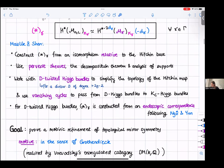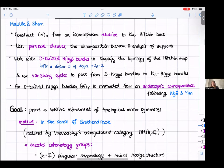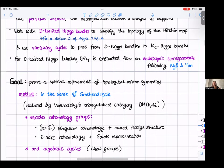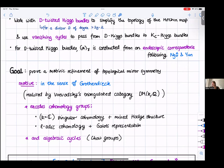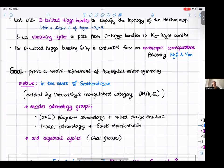We wanted to prove a motivic refinement of topological mirror symmetry, where by motive I mean in the sense originally envisaged by Grothendieck. This was realized by Voevodsky's triangulated category of motivic sheaves. This category encodes cohomology groups — over the complex numbers it encodes singular cohomology and its mixed structure, but also l-adic cohomology and its Galois representation structure, algebraic de Rham cohomology, and algebraic cycles.